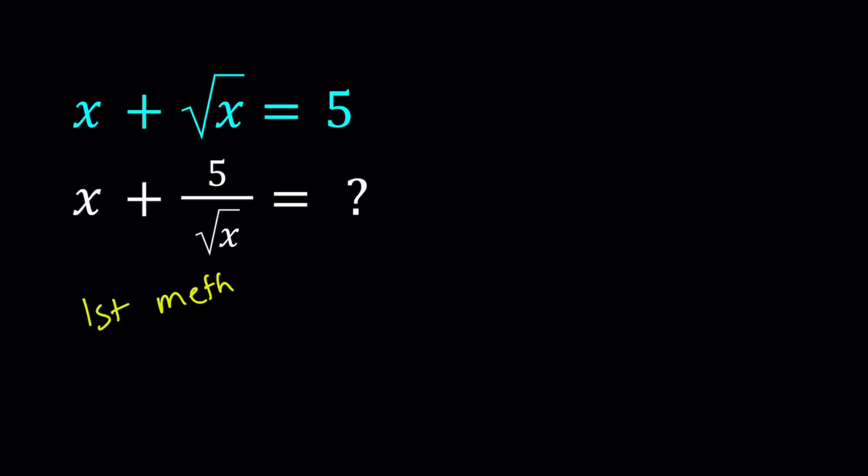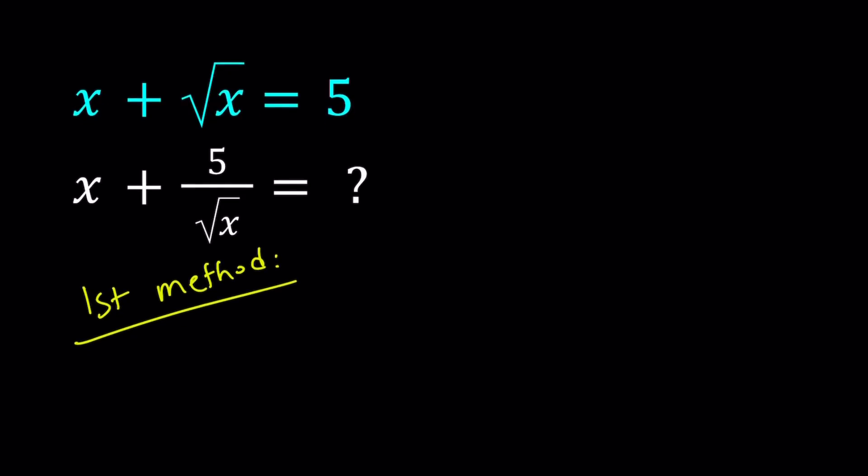The first method is almost always more fun, right? So my first method basically involves brute force, and I'm going to solve this equation. I was given an equation, so why not solve it? We're given x plus square root of x equals 5. This is a radical equation, and there are different ways to solve it.